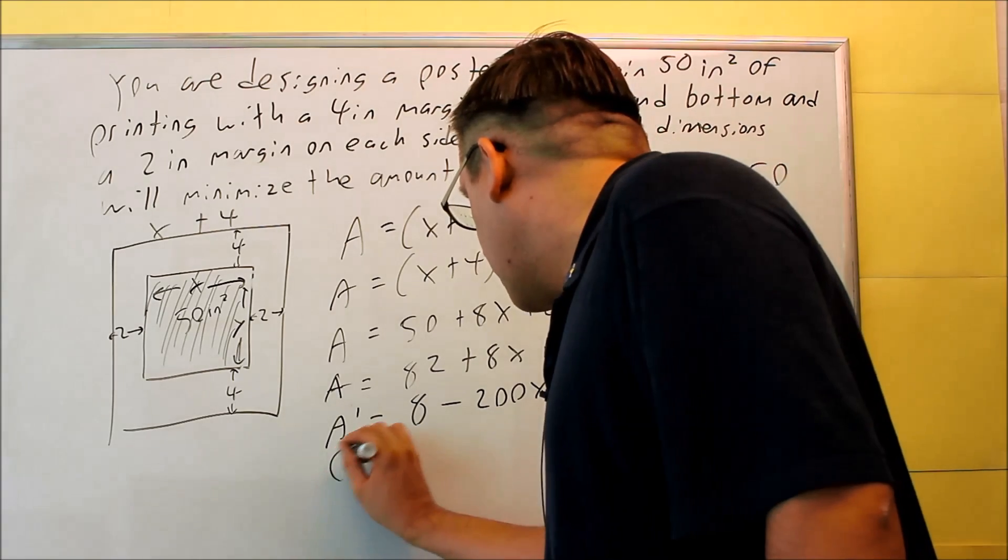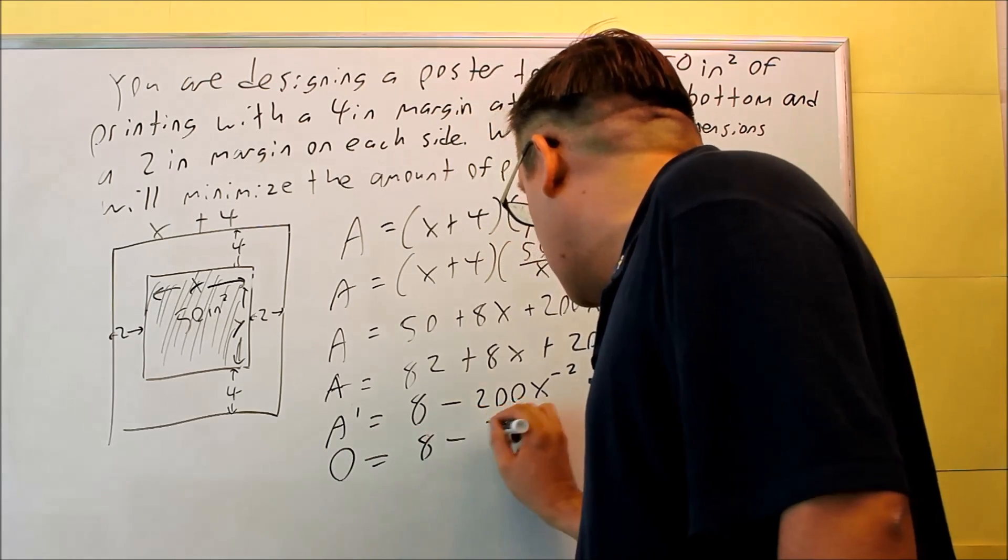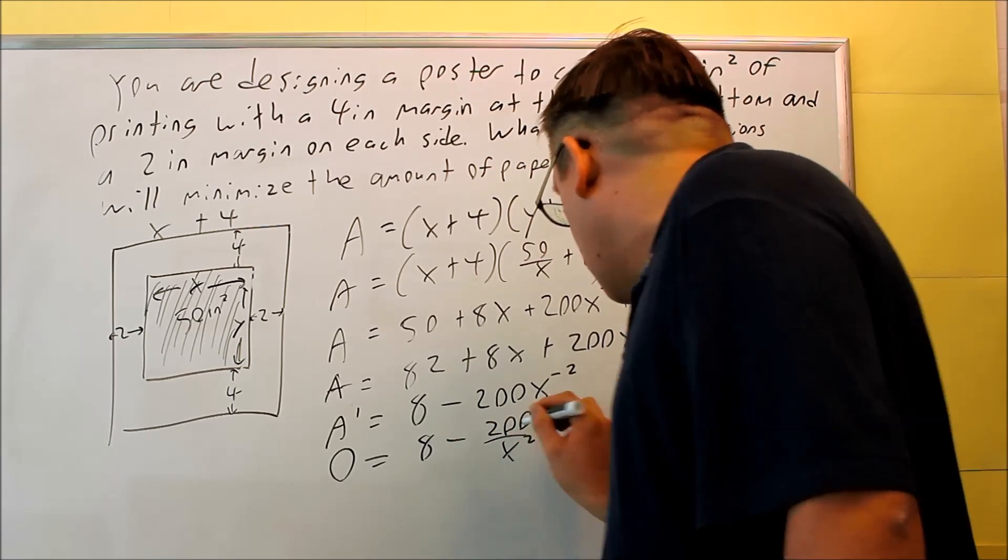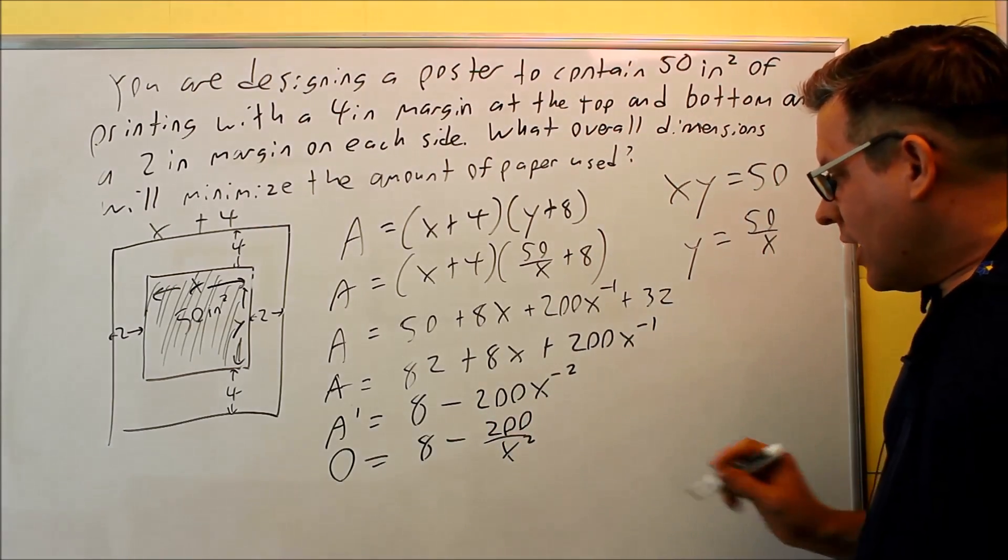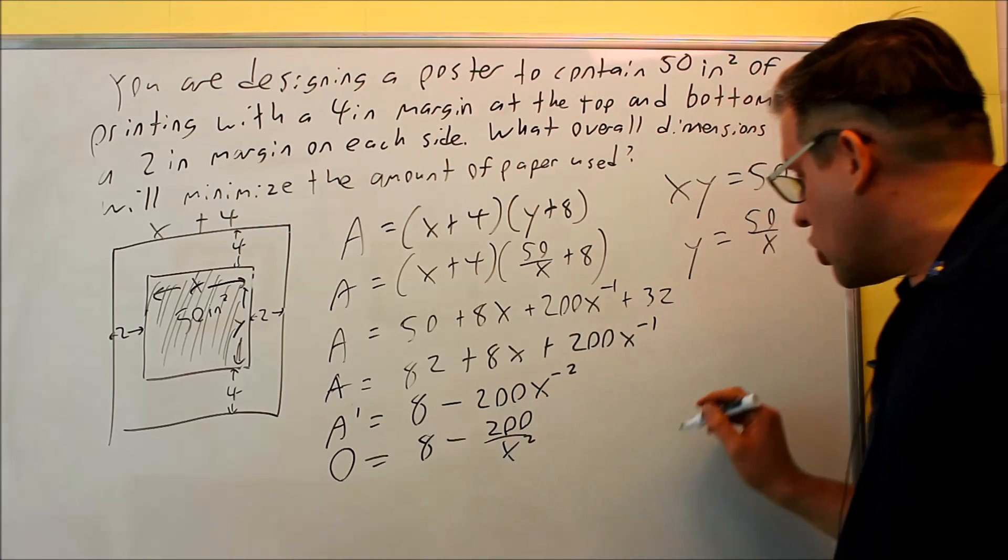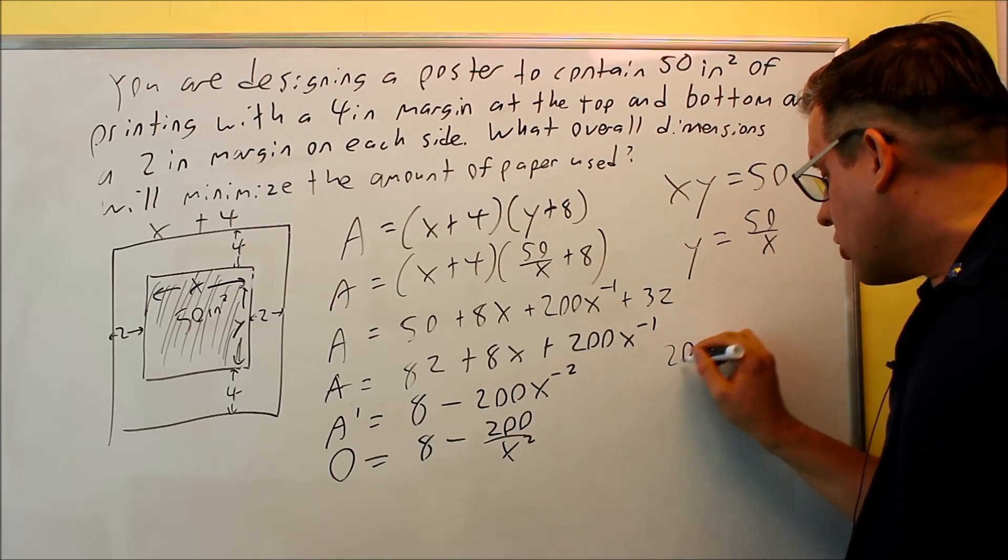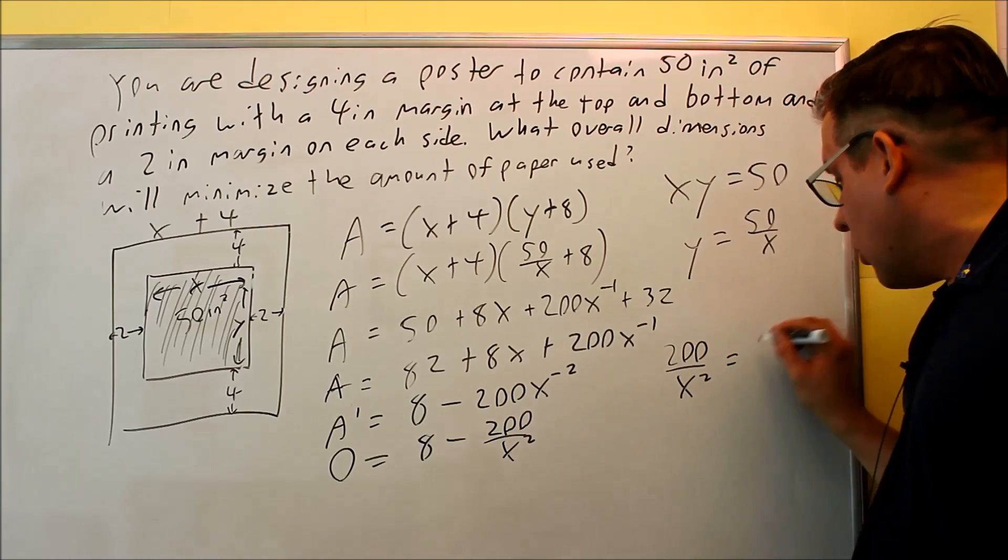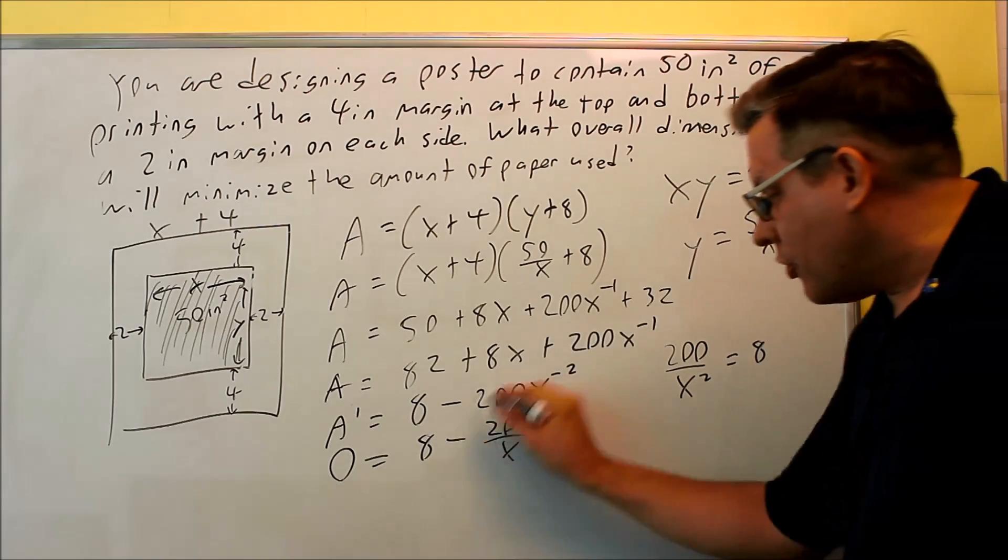This is the part that I want to take and set it equal to 0. So I'm going to put a 0 in there, and then this is 8 minus, I can write that as 200 over x squared. And then I need to move one of the terms over. So let me do that on the side over here.